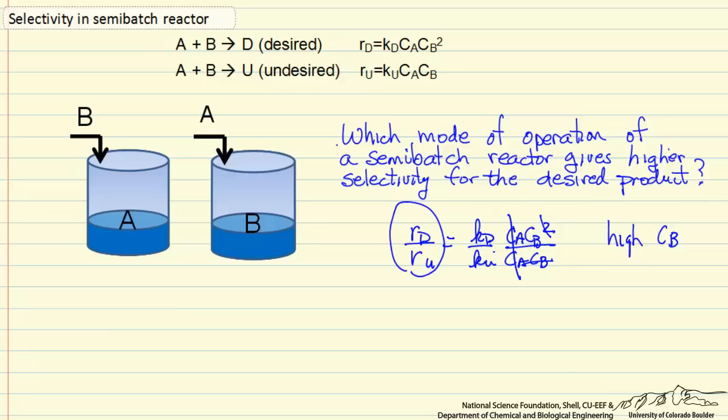This would be an instantaneous selectivity here at any time, this rate we're making D relative to U. So that says this is the mode of operation that we would use to give us the highest selectivity. And the question now is, how high is that selectivity? To determine that we need to solve the material balances.